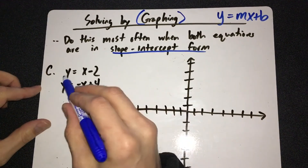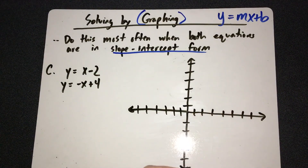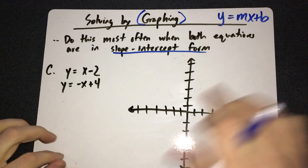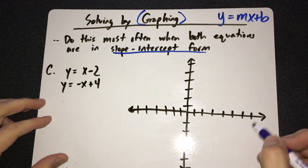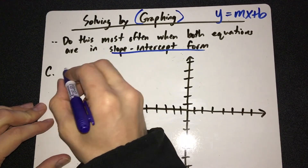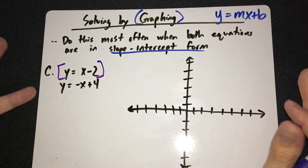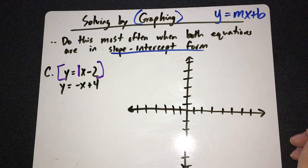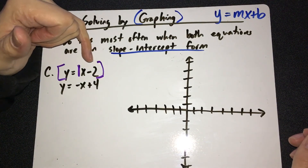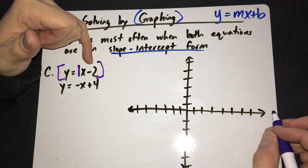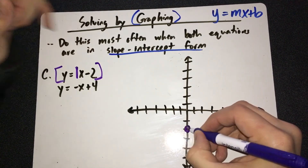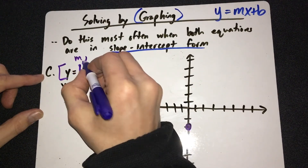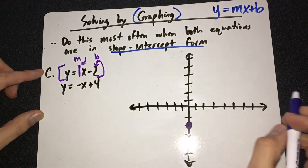Here is your system of equations. We're going to graph both of these — our goal is to graph them and see where the lines cross, because that crossing point is your answer. For the first equation y = x - 2: the end of the equation is the beginning of your graph. The y-intercept is negative 2, so start two places below the origin. The slope is 1, which means rise 1, run 1 to the right — up 1 and over 1.